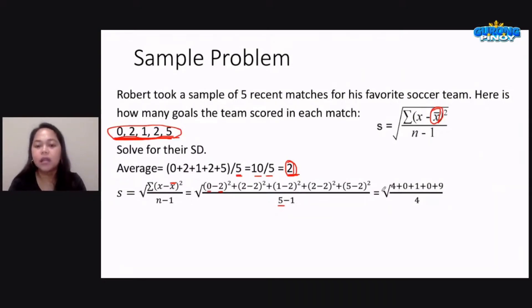So that would give us the square root of 4. Saan natin kinuha itong 4? 0 minus 2 is negative 2, and we square that, so negative 2 times negative 2, that would give us positive 4. Then you have 2 minus 2, so that's 0. 0 times 0 would just be 0.